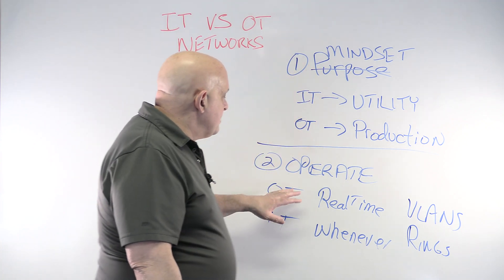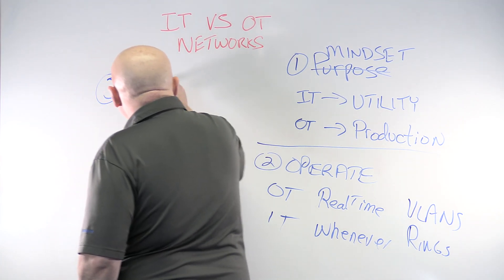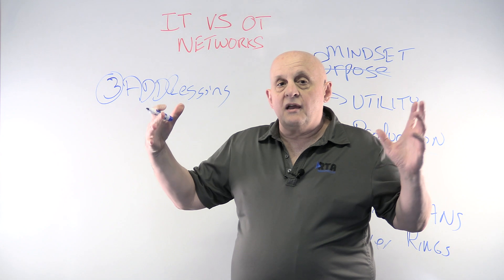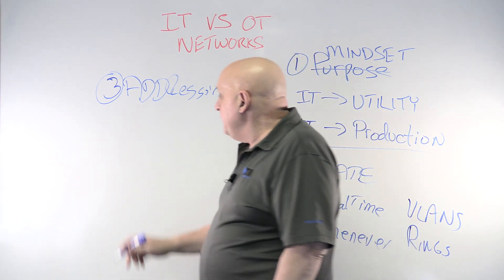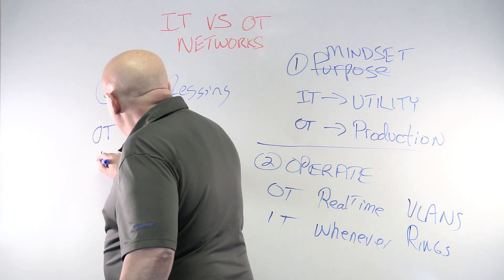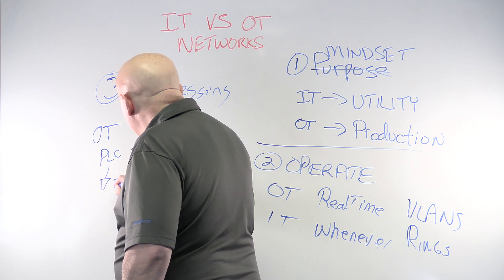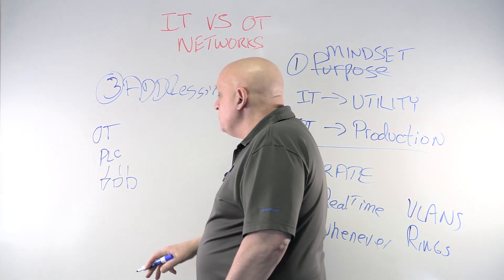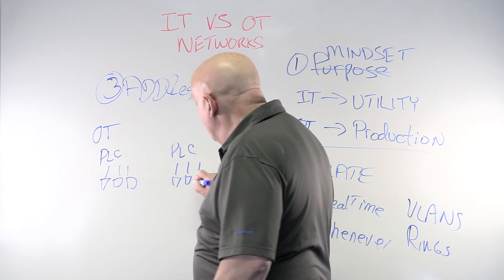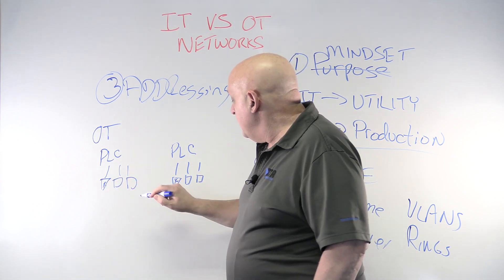The third thing I would point to is how we do addressing. Addressing is different. In the IT world, everything has to have a unique and different address. In the OT world, lots of times we're going to address machines identically. If we've got a PLC and a bunch of devices connected to it on a switch, and then another PLC that functions the same way with the same kind of devices in a different part of the plant, we're going to address these things the same — device X will have the same address as device X over there.